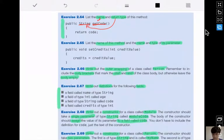Second exercise: setCredits is the name of the method, the name of its parameter is creditValue, and the type of the parameter is int.